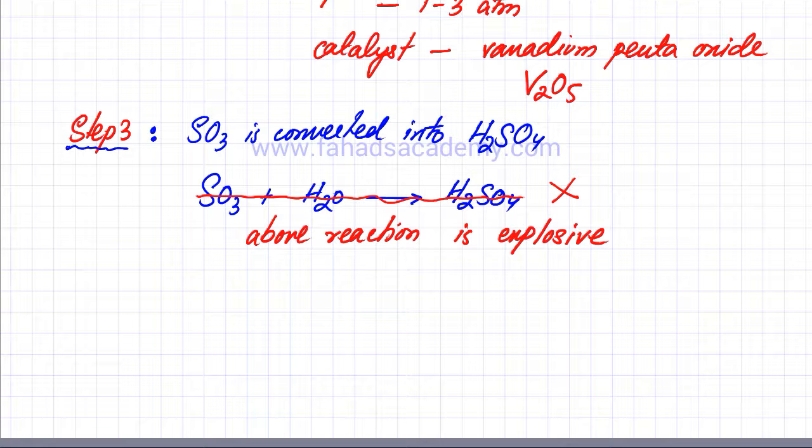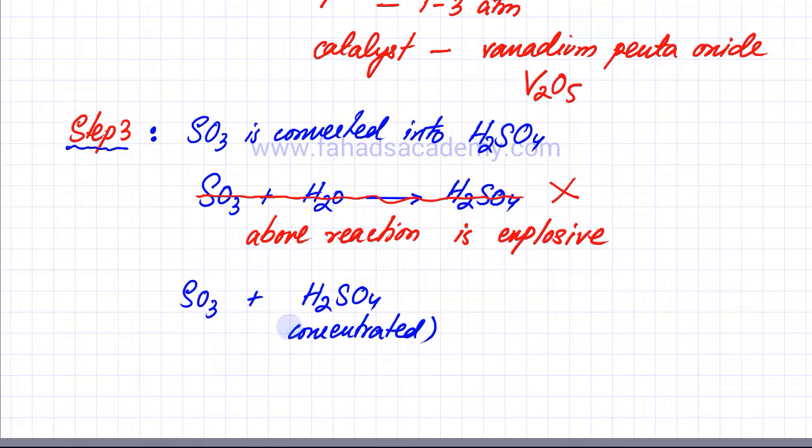Instead, an indirect method is used in which sulfur trioxide is first dissolved in concentrated H2SO4. Remember, this is concentrated. If you miss the term concentrated in your answer, it might be marked incorrect. This results in a compound called oleum (H2S2O7).